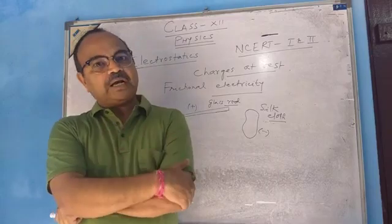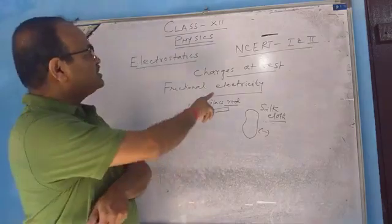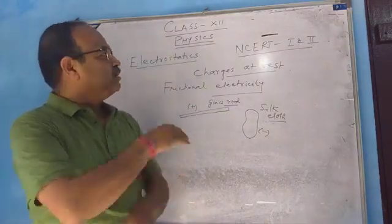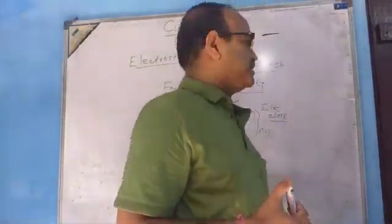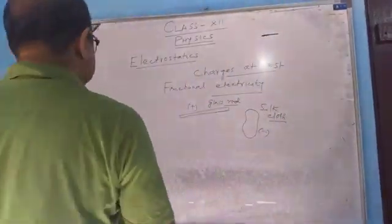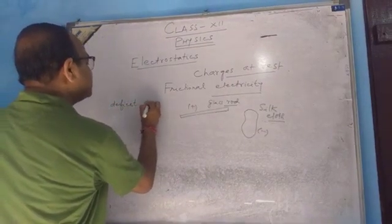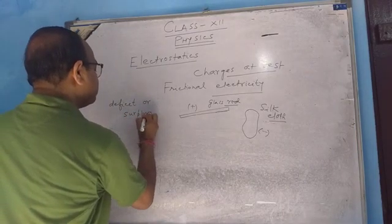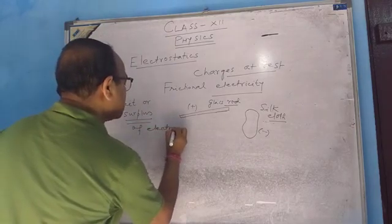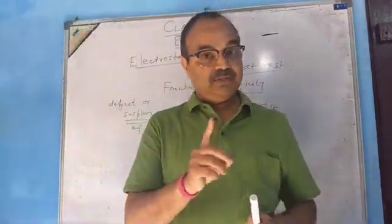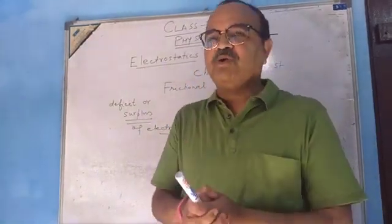From this description, what is charge? What can we say about charge? Charge means the deficit or surplus of electrons. This is the microscopic point of view.